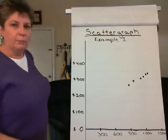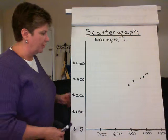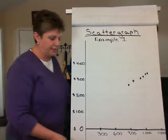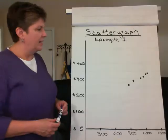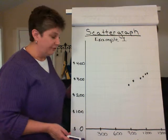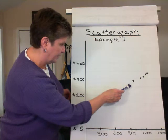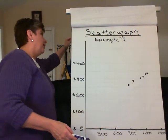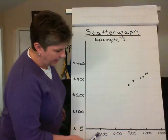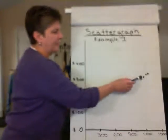A scatter graph is the same type of graph we saw when discussing different cost behaviors. The vertical axis is total cost, and the horizontal axis is our activity measure — in this case, number of pounds shipped. To use a scatter graph, you simply take your data and plot it on a graph, which I've done by hand here. At 900 units, our total cost was about $265, and at 1,200 units it was about $320. I just plotted each of those points.